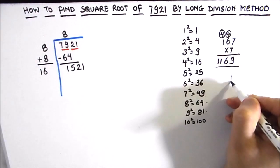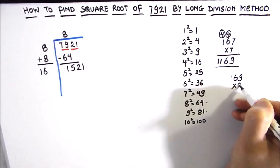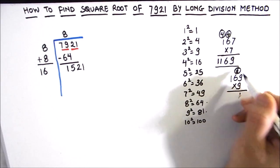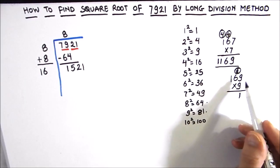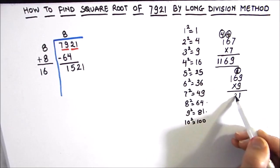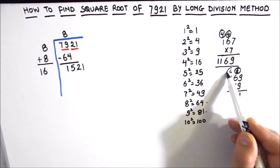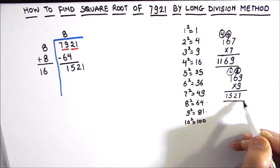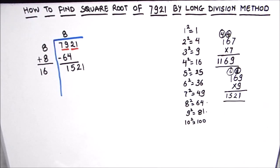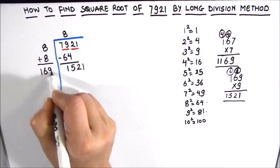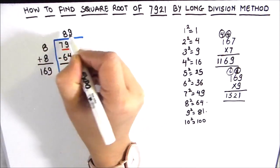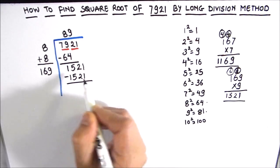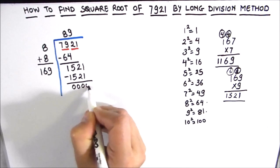So 169×9: 9×9=81, carry 8; 9×6=54, 54+8=62, write 2, carry 6; 9×1=9, 9+6=15. We get exactly 1521. So we annex 9 as our next quotient digit. Subtracting 1521 from 1521 gives a remainder of zero.